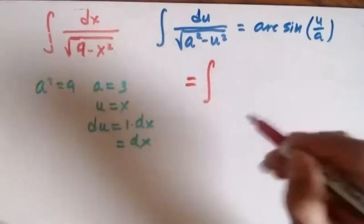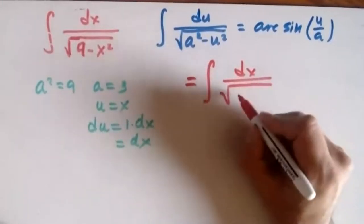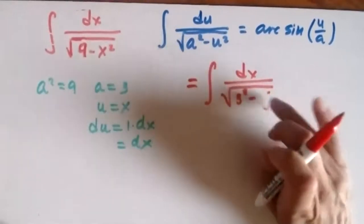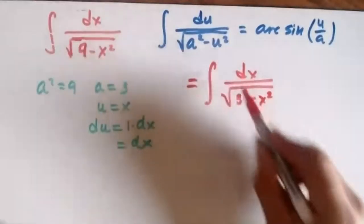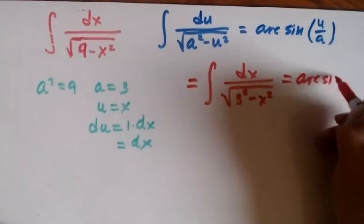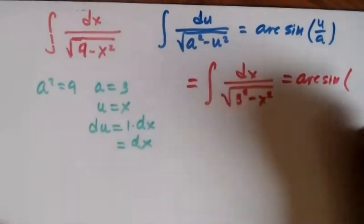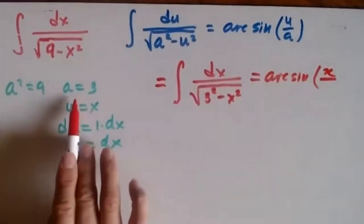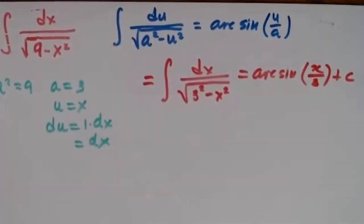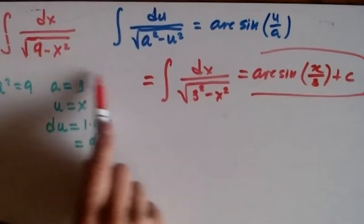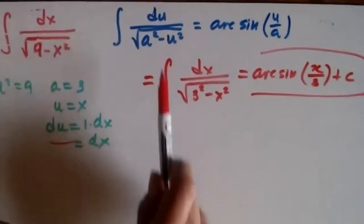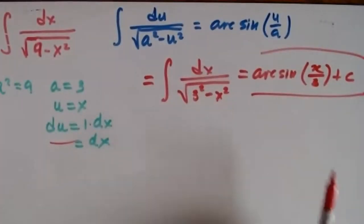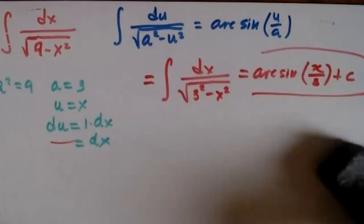My integral becomes the integral of dx over the square root of 9 minus x squared. Matching the formula, the solution is arcsin(u/a), where u is x and a is 3. So the answer is arcsin(x/3) plus C. That's it.